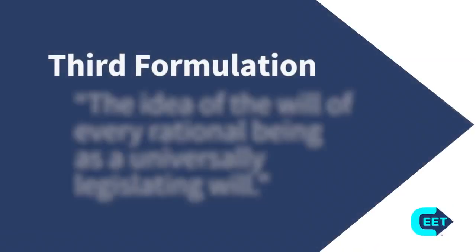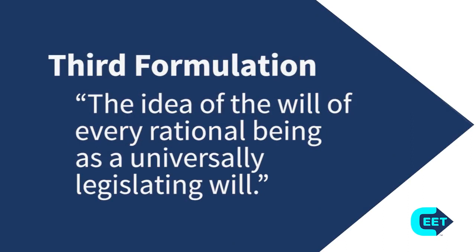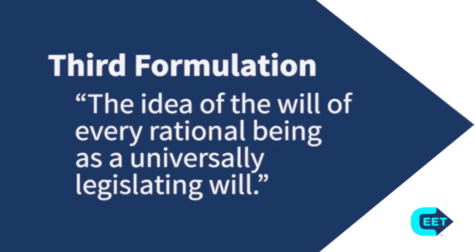The third formulation of the categorical imperative is defined by Kant as the idea of the will of every rational being as a universal legislating will. In other words, a moral law cannot be universal unless all rational beings endorse it. Each being must will moral laws themselves — they must all legislate that morality themselves. In doing so, each being must ensure they don't violate the freedoms of others.